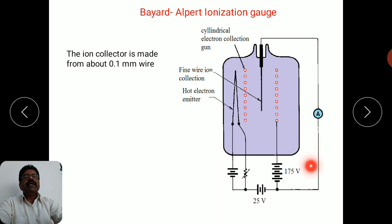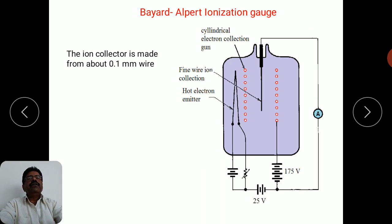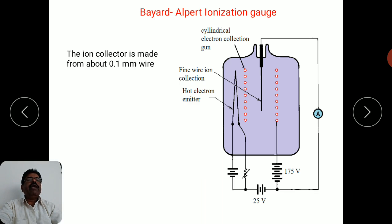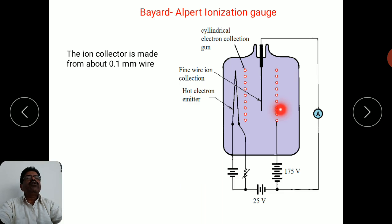The current measured through the meter is the current due to the collection of ions at this negative electrode. The filament is totally outside of the grid of the electron collection gun. There is a positive electrode which collects the electrons and a negative electrode which collects the ions.